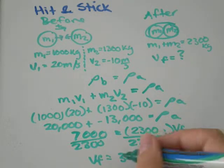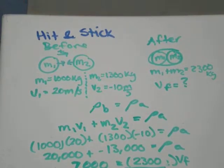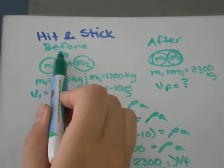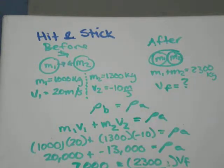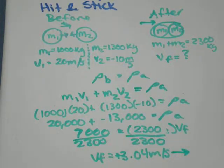Velocity is meters per second, so this is a positive number. Up here, we said that the positive direction goes to the right. So our velocity is going to be this way. It's going to be 3.04 meters per second to the right.